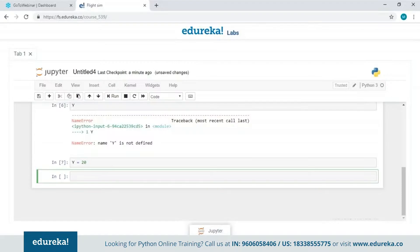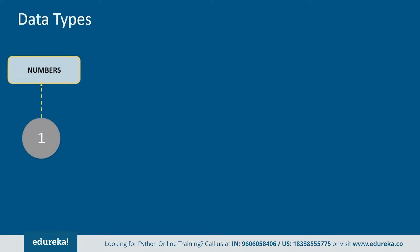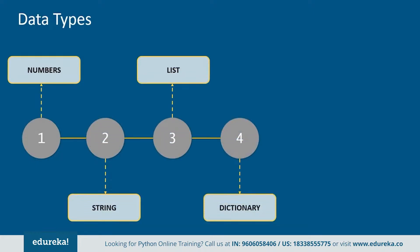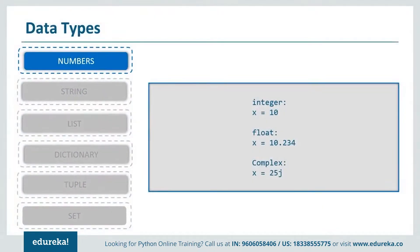Now let's move on to variable data types. Depending on the properties they possess, there are mainly six data types in Python: numbers, string, list, dictionary, tuple, and set. There is also range, which we'll cover at the end. For numerical data types we have four subtypes: integer (whole numbers), float (decimal point values), complex (using J as the imaginary part), and Boolean (returns only true or false for categorical output).